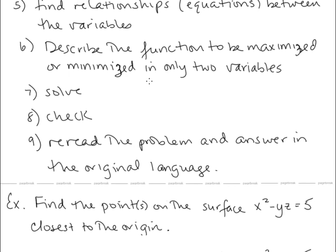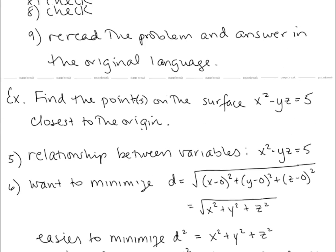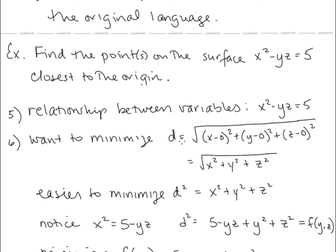Step 6 says describe the function to be maximized or minimized, and we want to describe it in only two variables. We know that we want to minimize distance to the origin, so we set up the equation for distance from point (x, y, z) to the origin. We're going to minimize d². Notice that if we minimize d-squared — getting rid of the radical — and minimize x² + y² + z², we get the same solution. Minimizing d-squared is much easier because the derivatives are so much simpler.